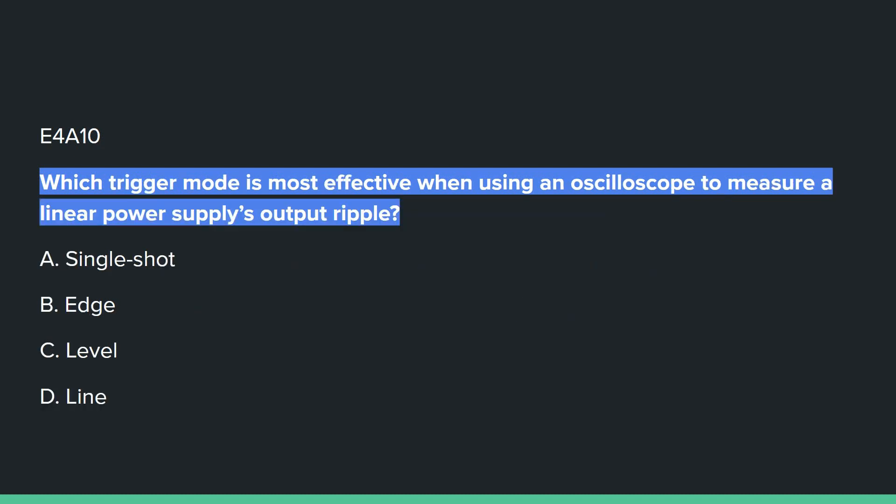E4A10: Which trigger mode is most effective when using an oscilloscope to measure a linear power supply's output ripple? Answer D: line.